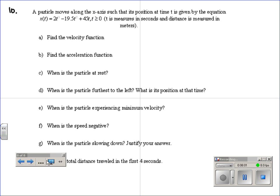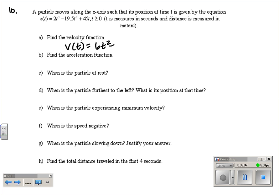Okay, 10, our long problem. Find the velocity. Easy. Take the derivative. So we get 6t squared minus 19.5 times 2 would give us 39t plus 45. Acceleration is the derivative of the velocity, because we have PVA. So we get 12t minus 39.